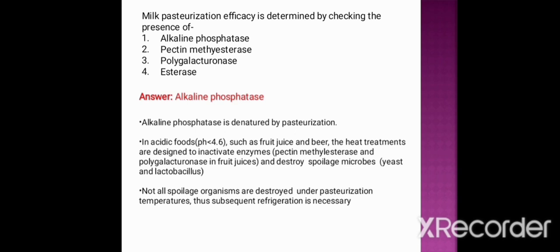Next question: milk is pasteurized in the batch method by keeping it at which condition? Option one: 63 degrees centigrade for 30 minutes. Option two: 72 degrees centigrade for 20 seconds. Option three: 73 degrees centigrade for 30 minutes. Option four: 72 degrees centigrade for 6 minutes. The correct option is option one — the batch method of pasteurization is done at 63 degrees centigrade for 30 minutes.